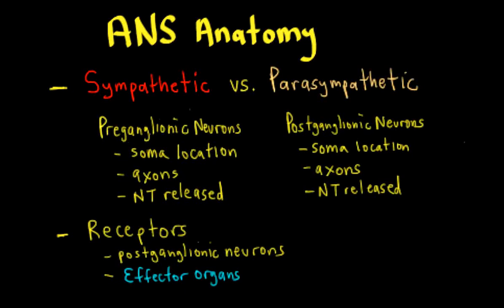After watching this video, you should be able to describe the autonomic nervous system anatomy with a focus on comparing the sympathetic and parasympathetic divisions. We're going to look at a variety of different things: preganglionic and postganglionic neurons, where the somas are located, axon features, and the neurotransmitters that are released. We're also going to look at the receptors involved for the ANS found on postganglionic neurons, as well as the effector organs. So let's review our autonomic nervous system schematic.